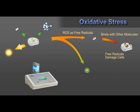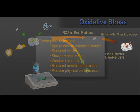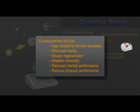Aging itself puts a heavy load on us as we are living longer and demanding more performance even in later years. Important consequences of oxidative stress damage include age-related or chronic diseases, reduced vitality, slower regeneration, weaker immunity, and reduced mental and physical performance.